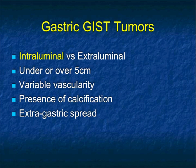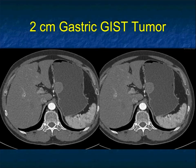When looking at GIST tumors on CT, I evaluate: intraluminal versus extraluminal location (intraluminal is less common); whether they're over or under 5 cm (aggressiveness is defined by this); vascularity (smaller tumors are more vascular); calcification (rare but does occur); and extra-gastric spread (also rare but does occur).